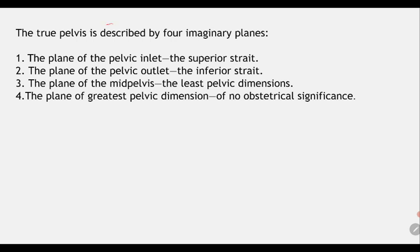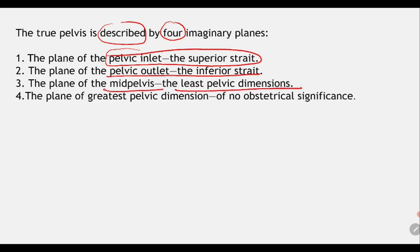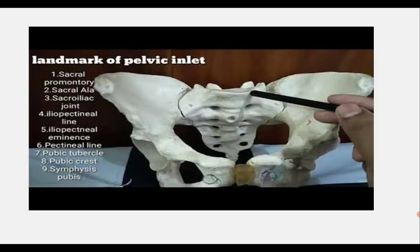The true pelvis is described by four imaginary planes: the plane of the pelvic inlet (superior strait), the plane of the pelvic outlet (inferior strait), the plane of the mid pelvis (also called the plane of least pelvic dimensions), and the plane of greatest pelvic dimension, which has no obstetric significance.